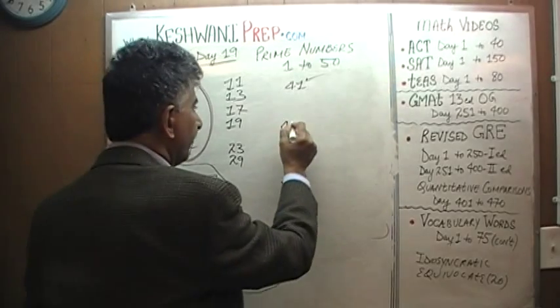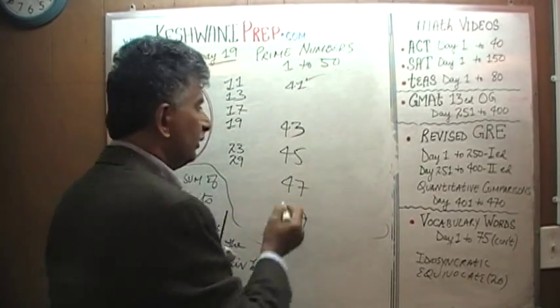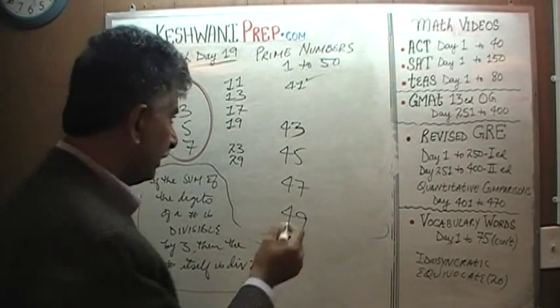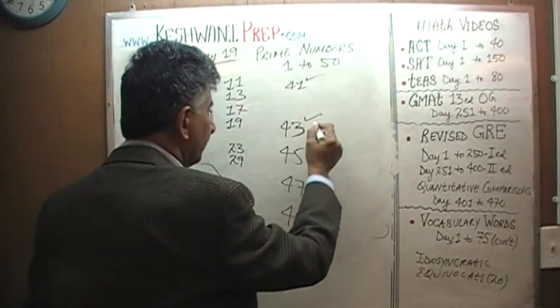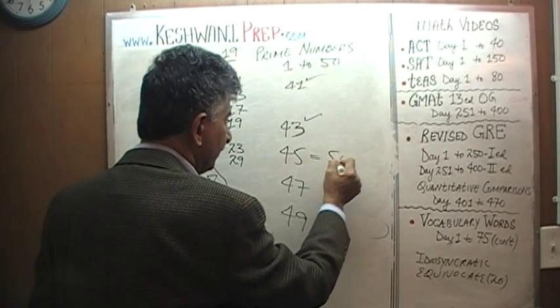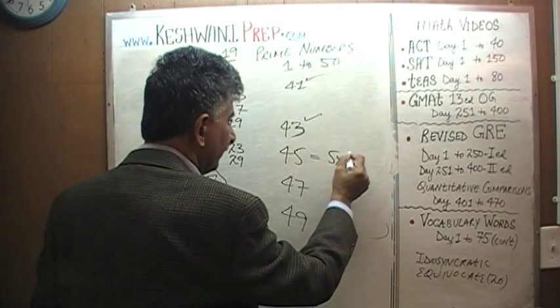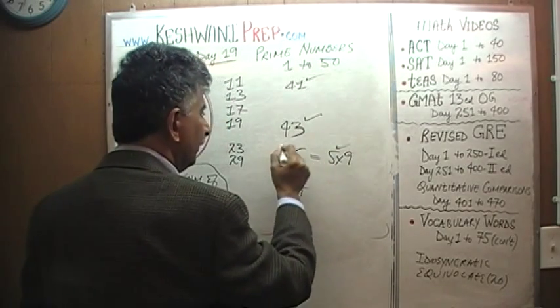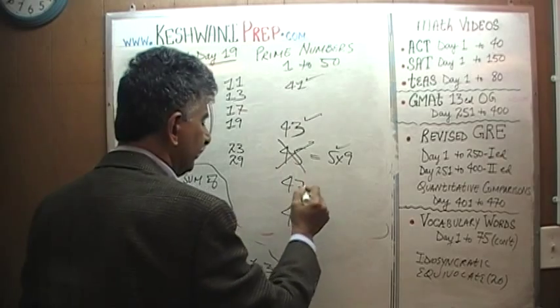43 is a prime number. 45 is not a prime number because it is simply 5 times 9 — it is divisible by 5. It is not a prime number.